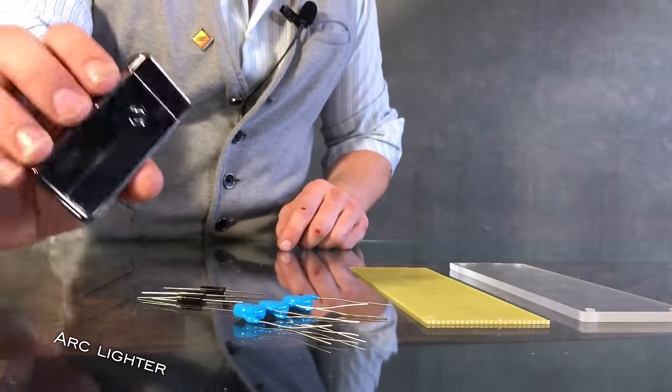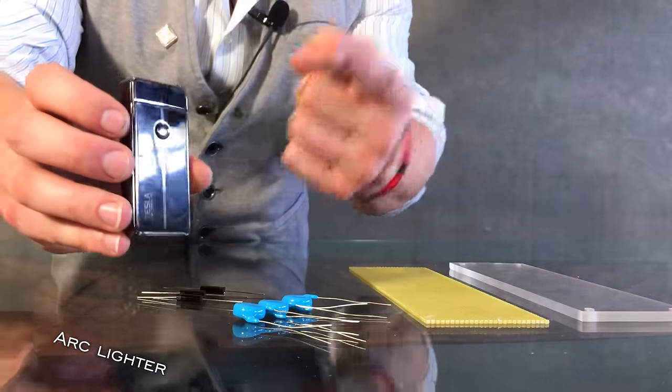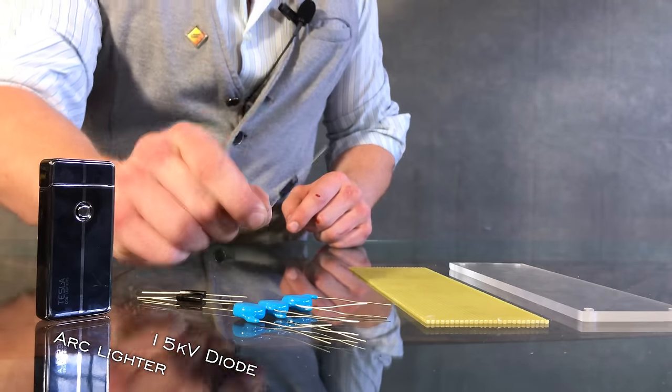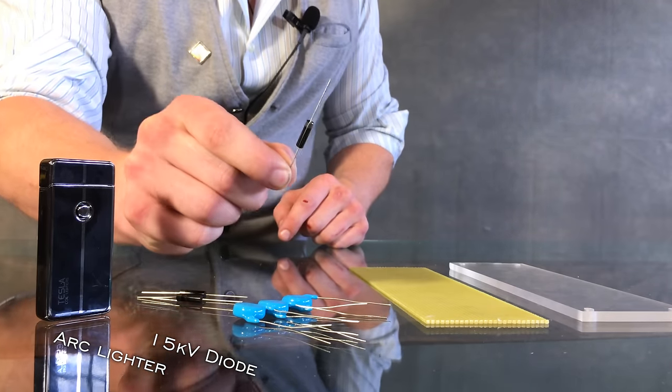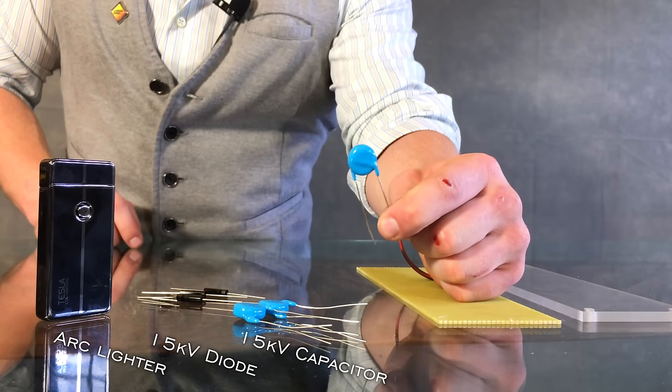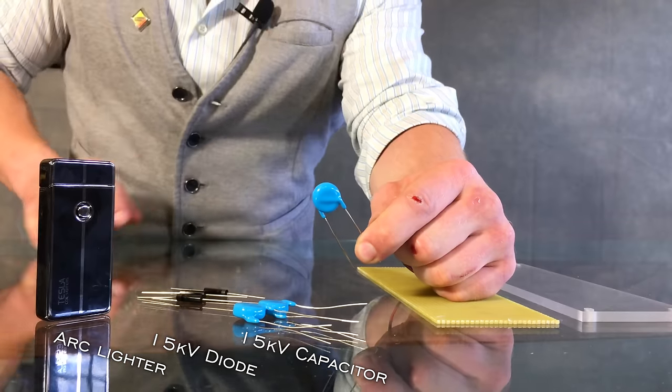First, this uses an arc lighter of traditional lighter design, one with the power button on this side and as close to the lid as possible. High voltage diodes rated at 15 kilovolts, 100 milliamps apiece. Next up is 15 kilovolt, 1 nanofarad ceramic capacitors.